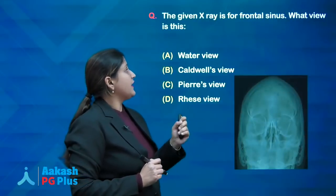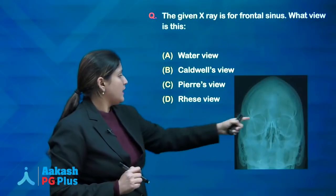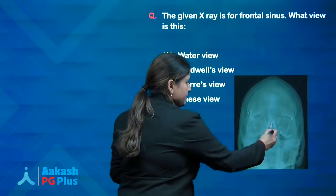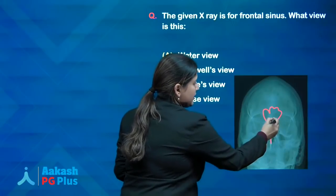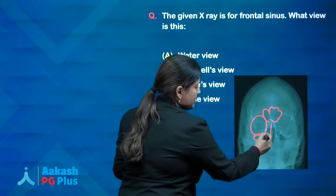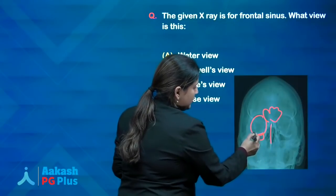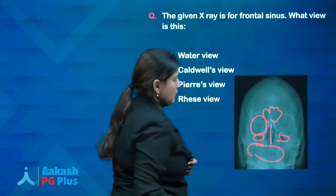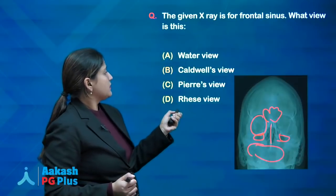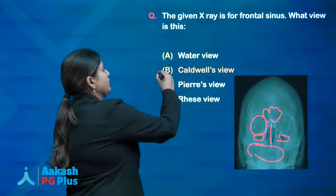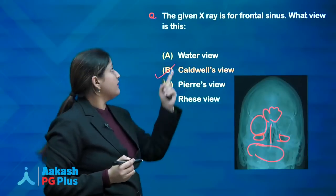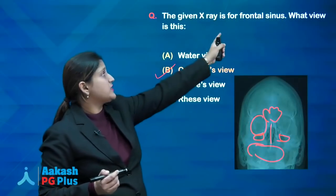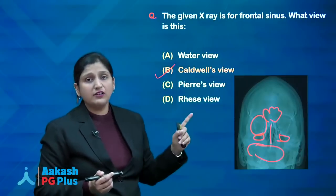The next question: the given X-ray showing the frontal sinus — what view is this? You can see the frontal sinuses, orbit, and maxillary sinuses. The answer is Caldwell's view. The Caldwell-Luc view is done for the frontal sinus. Even if you don't recognize the view, if it is given for the frontal sinus, the answer is Caldwell's view.